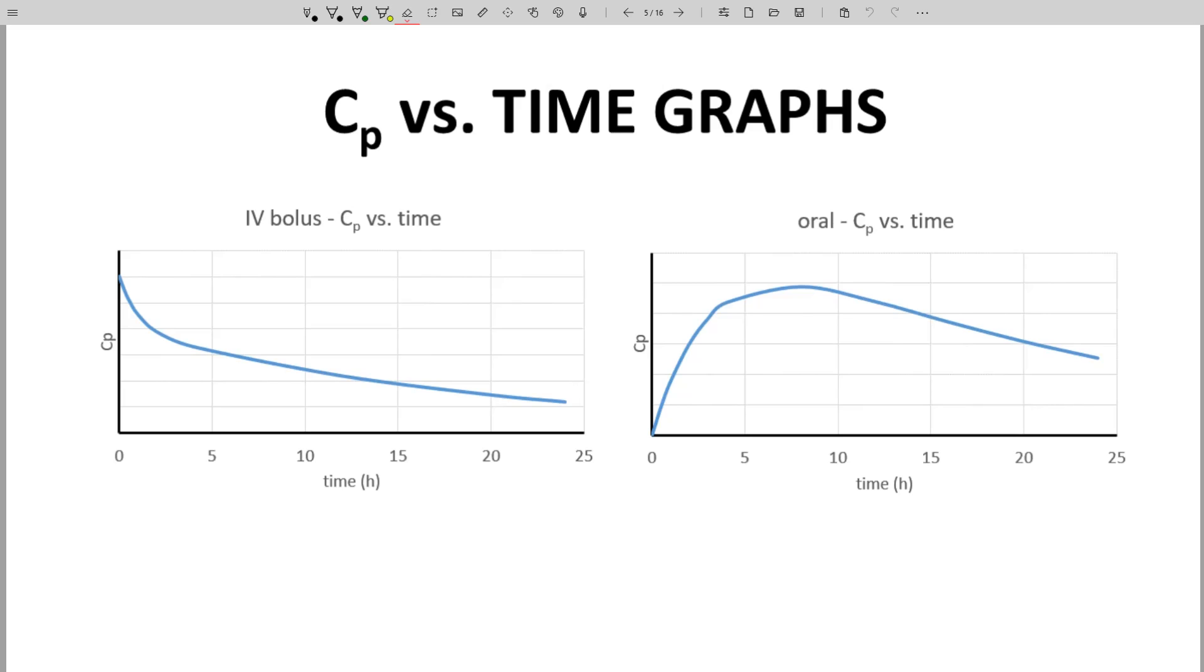On the screen are two CP time graphs. The graph on the left is for a molecule administered by an IV bolus. The entire dose is injected almost instantaneously into a vein of an animal. On the right is the CP time curve for an orally administered dose.